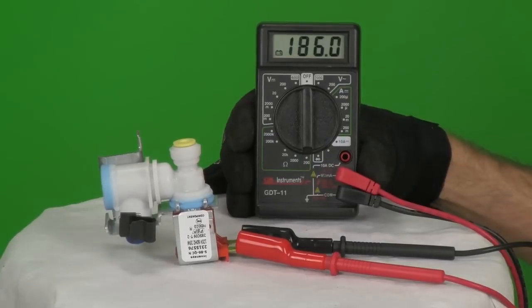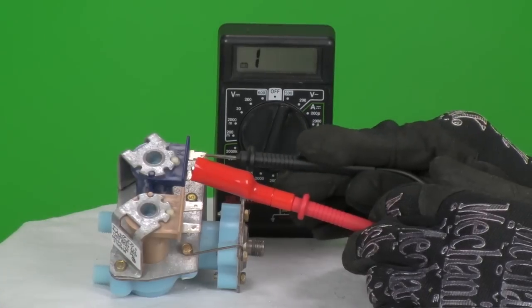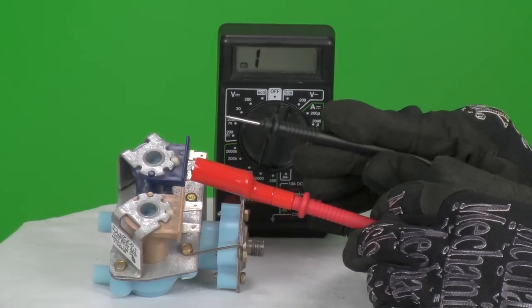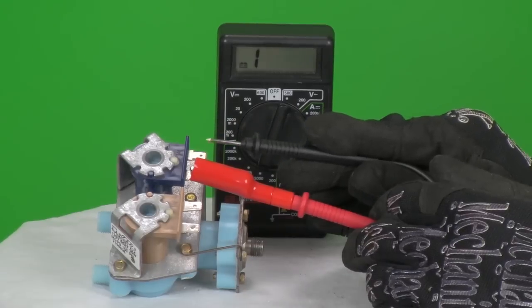This water valve solenoid tests about 200 ohms of resistance. This one about 350. Both will operate properly as an electromagnet to open the internal gate.